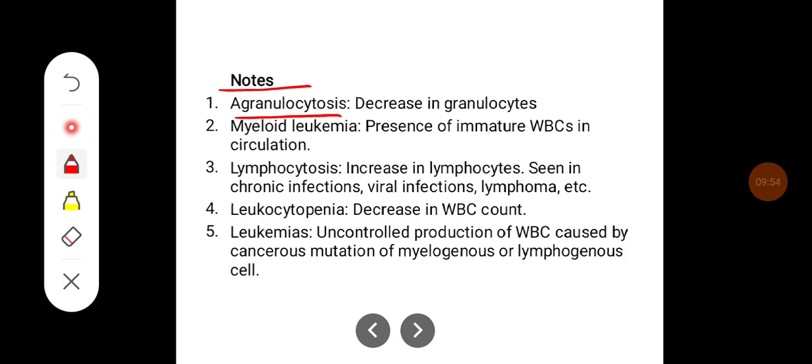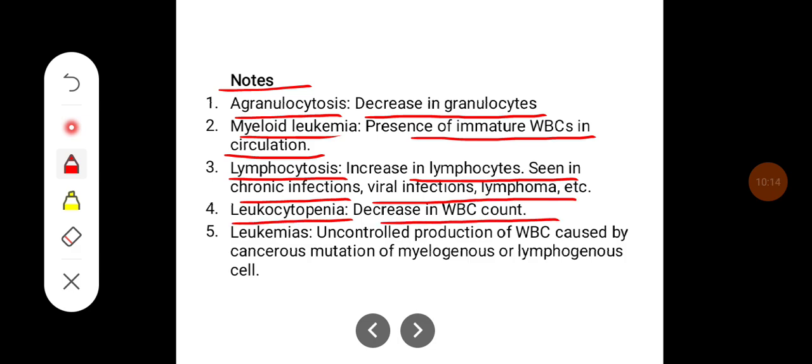Agranulocytosis is the decrease in the granulocyte count. Mild leukemia is presence of immature WBCs in the circulation. Lymphocytosis is increasing the lymphocytes seen in chronic infections, viral infection and lymphomas. Leukocytopenia is the decrease in WBC count. And leukemias are the uncontrolled production of WBCs caused by cancerous mutation of myelogenous or lymphogenous cells.